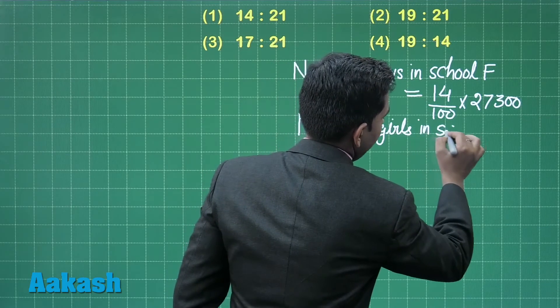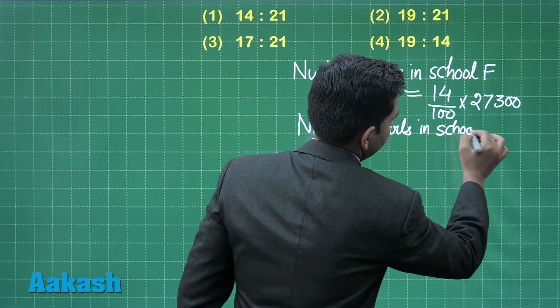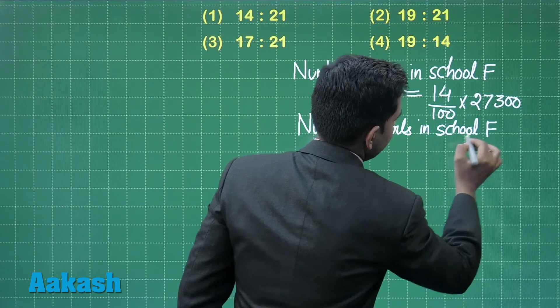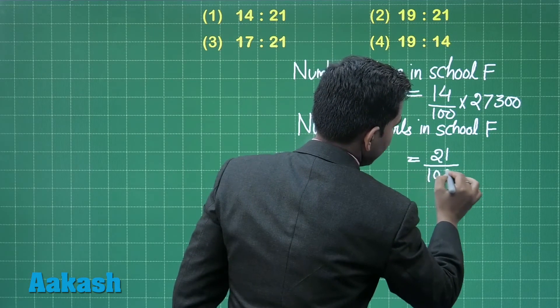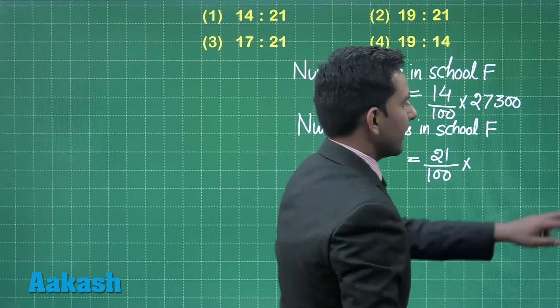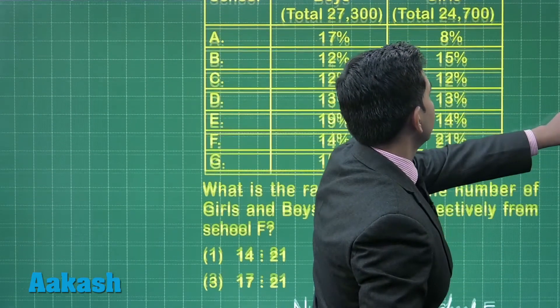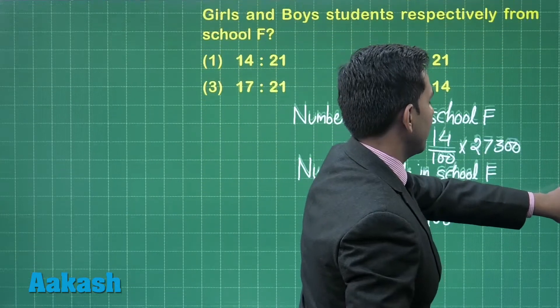The number of girls in school F equals 21%, that means 21 divided by 100 multiplied by the total number of girls. Here we have 24,700, so it's 21/100 × 24,700.